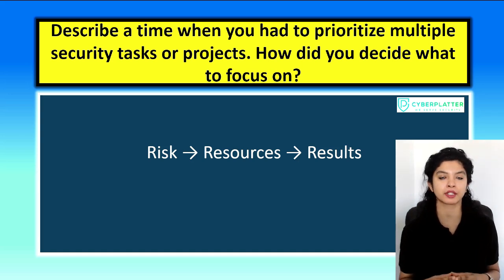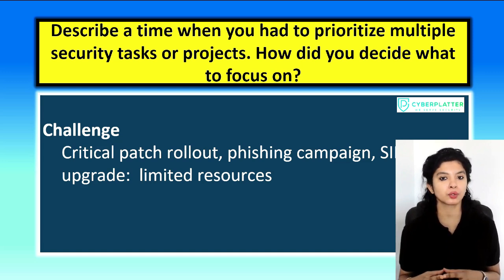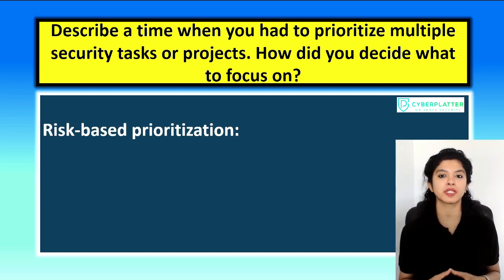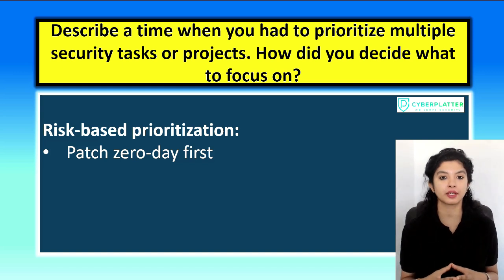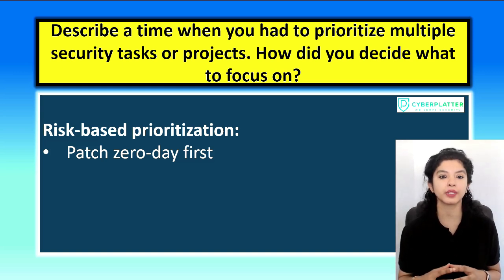Let's look at an example situation. In a previous role, I was managing several competing security priorities at once: a critical patch rollout, a phishing awareness campaign, and implementing a new SIEM feature. All of these were important, but resources were limited. My first step was to assess business impact and risk — that is, I did risk-based prioritization. The patch addressed a zero-day vulnerability with known exploits in the wild, so that became the top priority. I coordinated with IT to push emergency patches within 48 hours.